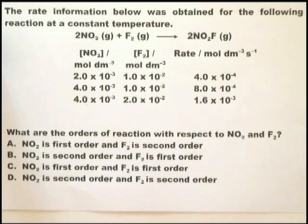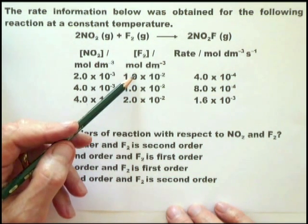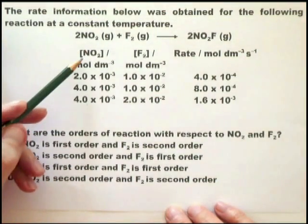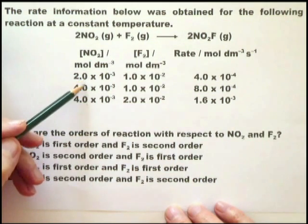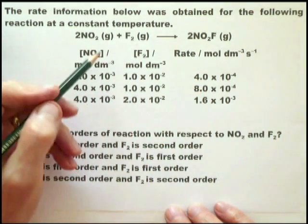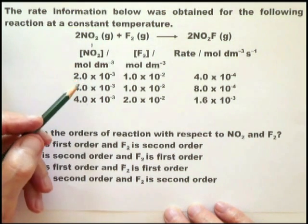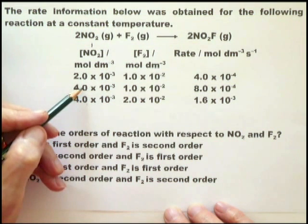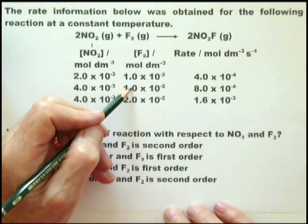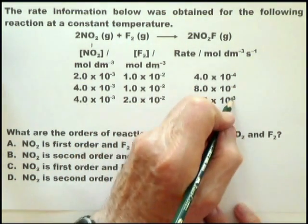This is another question where you're expected to determine the orders of reaction with respect to the reactants. The way to do this is to find two experiments where the concentrations of one of the reactants is held constant. So let's take this one and that one where the fluorine is held constant. And in this case, the NO2 is doubled in concentration. And then you see that the rate has doubled. And therefore there's a direct relationship between the concentration of NO2 and the rate. And therefore that is a first order reaction.